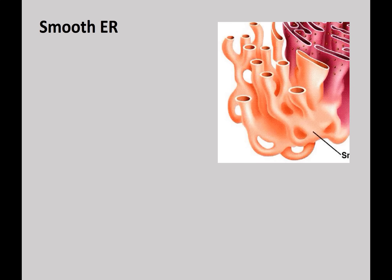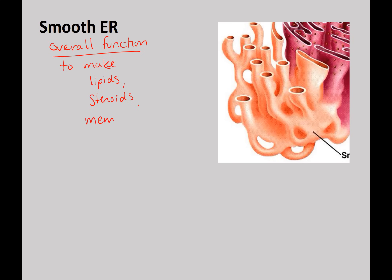The overall function of the smooth ER, no matter what cell type, is to make lipids, steroids, and ultimately membranes. This is the primary location of lipid, membrane, and steroid biosynthesis.